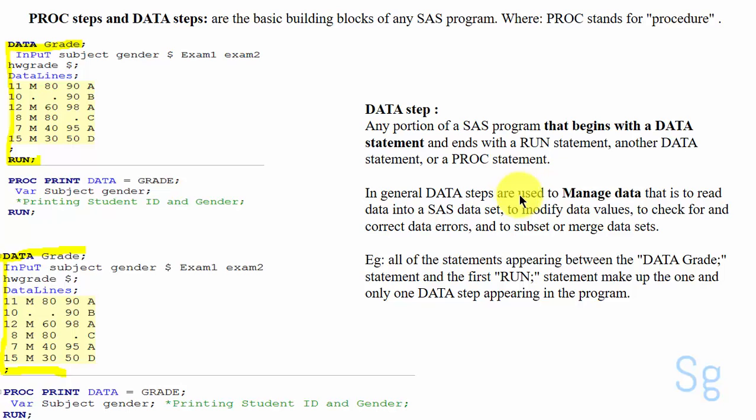In general, DATA steps are used to manage data—that is, to read data into a SAS data set, to modify data values, to check for and correct data errors, and to subset or merge data sets. For example, all of the statements appearing between the DATA grade statement and the first RUN statement make up the one and only DATA step appearing in the program.